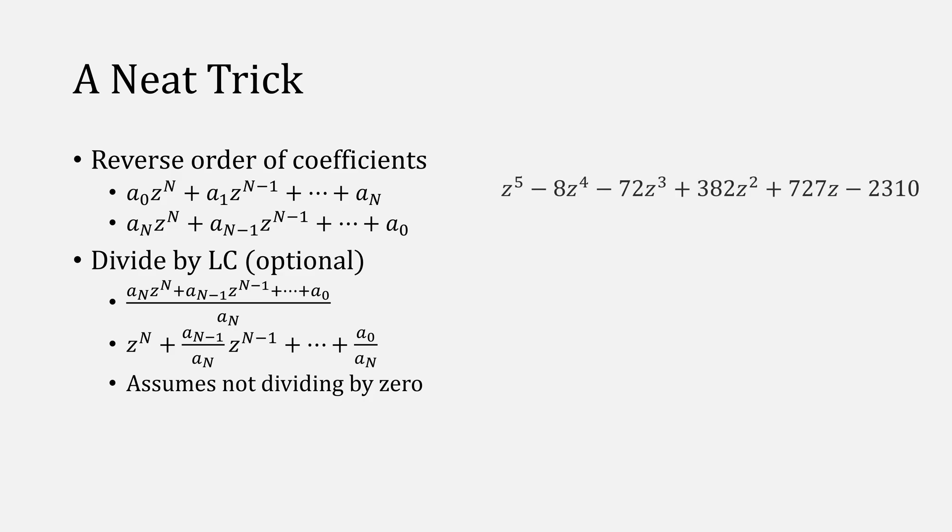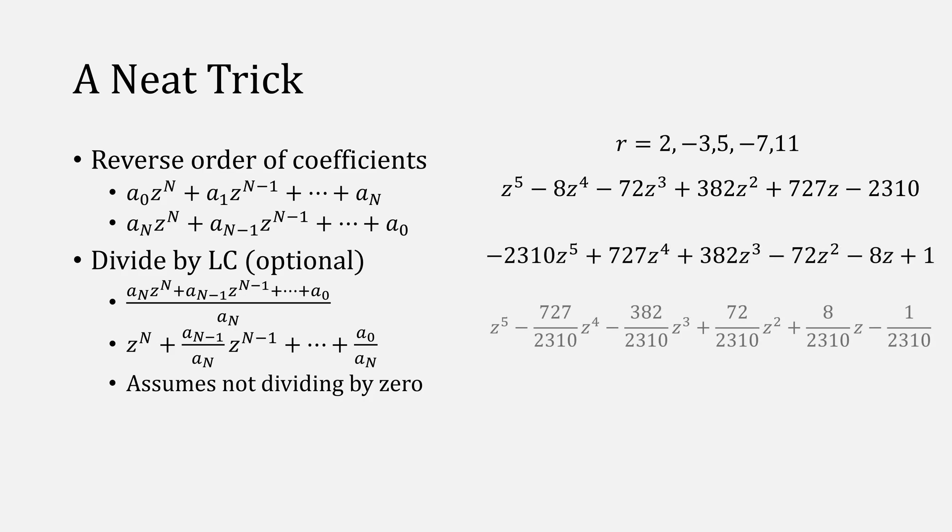This does assume that you're not dividing by 0. Our very long polynomial from earlier, with roots of 2, minus 3, 5, minus 7, and 11. Reverse the coefficients and divide them. I didn't simplify, but you could.